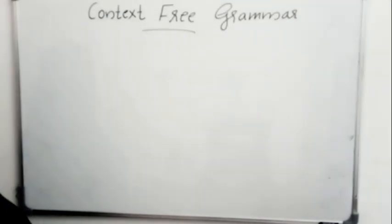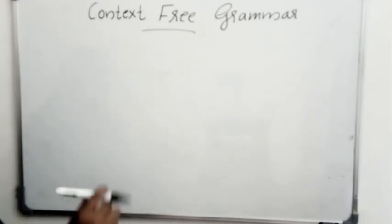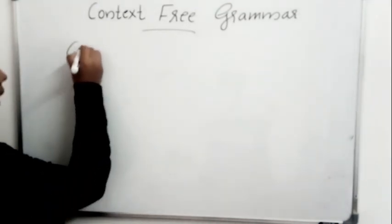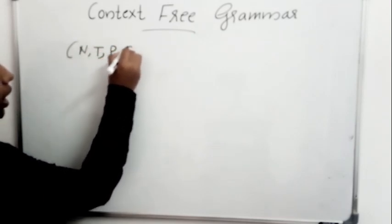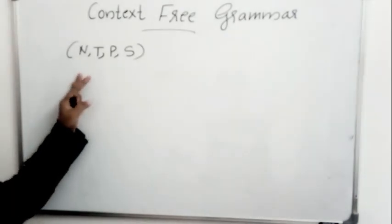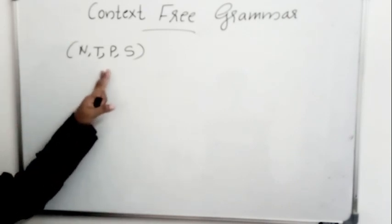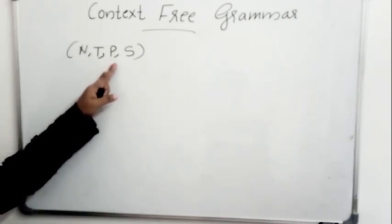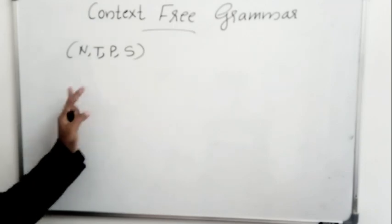Hello all. In this video we will have an introduction to context-free grammar. Formally, a context-free grammar is defined as a quadruple N, T, P, S — where N is a set of non-terminals, T is a set of terminals, P is a set of productions, and S is the start symbol of the grammar.